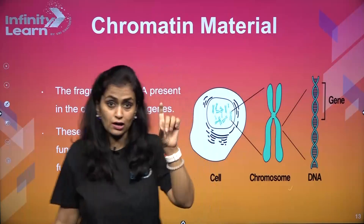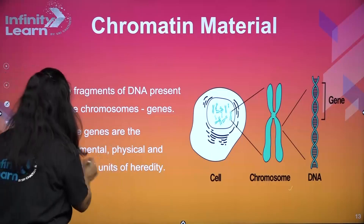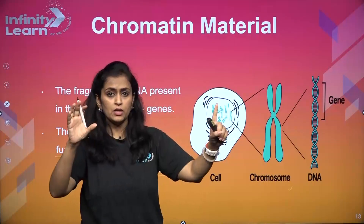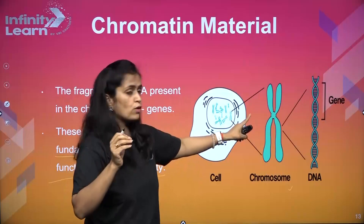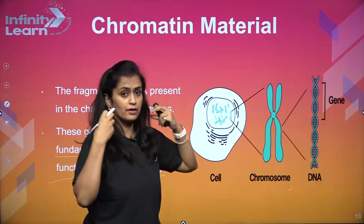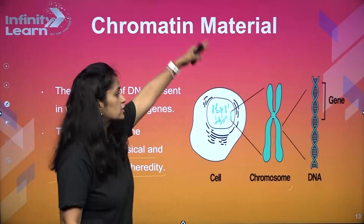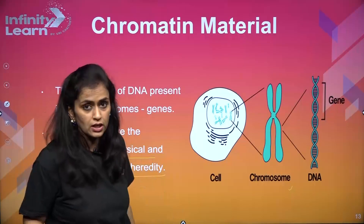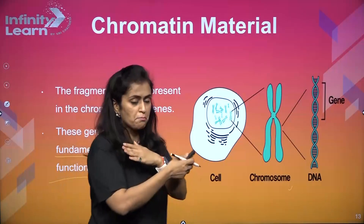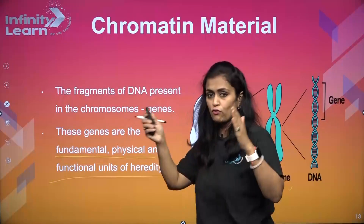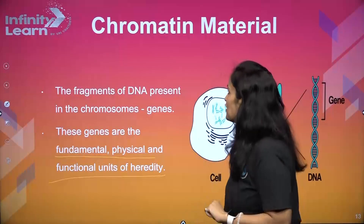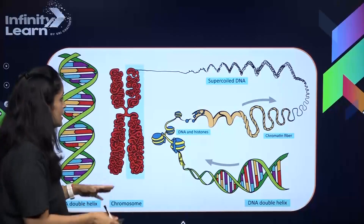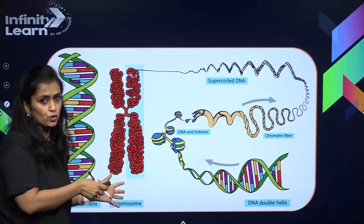DNA also has something called genes. Genes are the fundamental and physical unit of heredity — one gene, one character. For example, eye color will have one gene, and hair texture will have another. We have approximately 30,000 genes in our human DNA, as revealed through the Human Genome Project, where we have mapped the entire human DNA and know where each gene is present. So that is how DNA is packed inside — DNA, chromatin, gene, and chromosome.